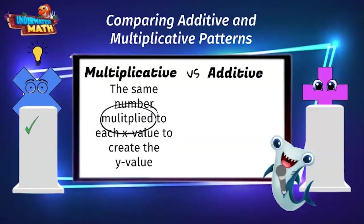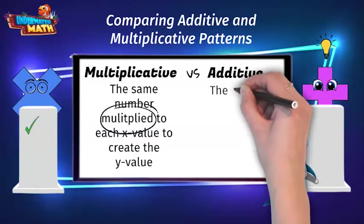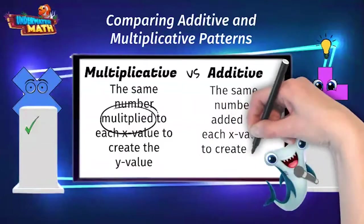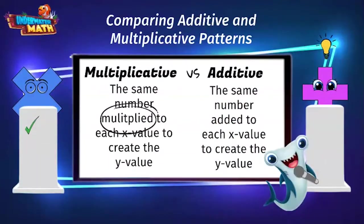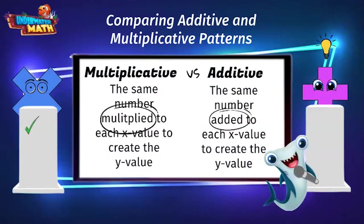And the definition of additive? Yes, Addy. Additive is a pattern in which the same number is added to each x value to create the y value. You got it. A number is being added from x to y, and we are tied.